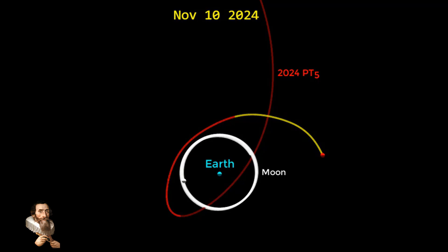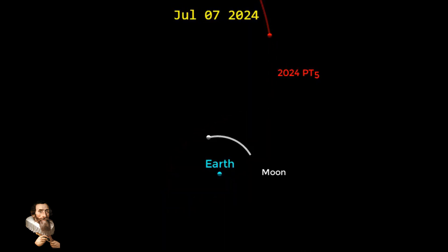After its brief stint as a mini-moon, asteroid 2024 PT5 will continue its journey around the Sun and is expected to have another close flyby of the Earth before leaving our vicinity until its next return in the year 2055.